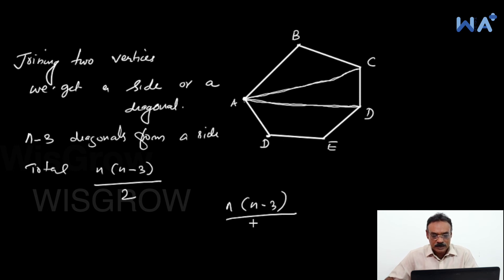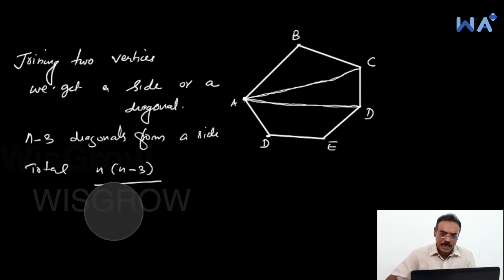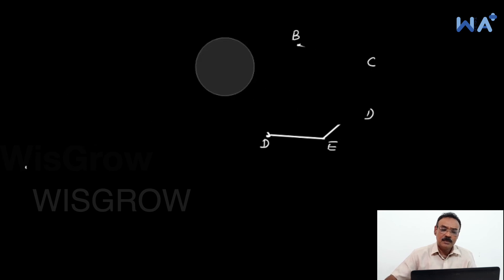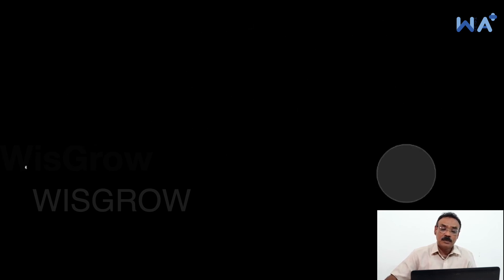If a polygon has n sides, the number of diagonals is given by n times n minus 3, divided by 2.